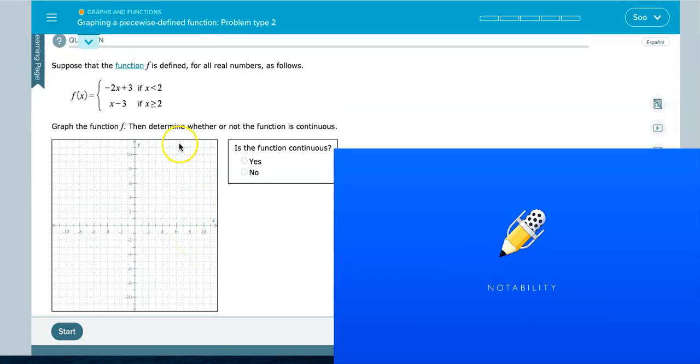Suppose that the function f is defined for all real numbers as follows. I see two pieces. The first piece is a line because it's in y equals mx plus b form. It's negative 2x plus 3, so we're looking at a slope of negative 2. We're going to use this one if x is smaller than 2, and we're going to use a bottom piece which is x minus 3 if x is bigger than or equal to 2.